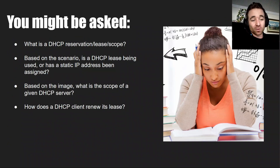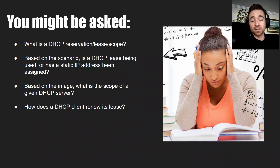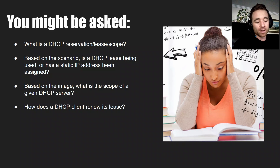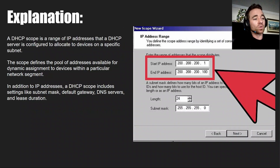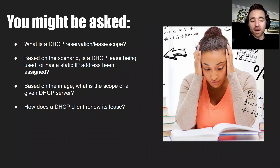A DHCP scope is just the range of IP addresses the DHCP server has available to give out — that's really all you need to know. You might also be asked what a DHCP reservation, lease, or scope is; whether a DHCP lease or static IP is being used in a scenario; what the scope of a given DHCP server is; or how a DHCP client renews its lease.